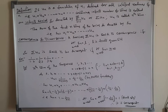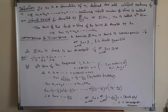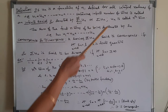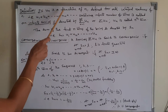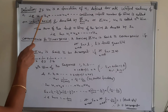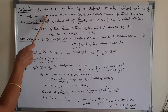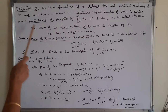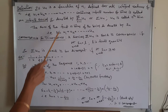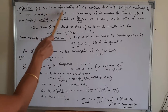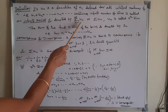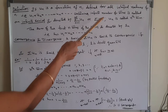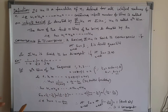If un is a function of n, defined for all integral values of n, then the expression can be written as U1 plus U2 plus so on plus un, containing an infinite number of terms. That is called an infinite series. It is denoted by sigma from n equals 1 to infinity of un, or simply sigma un. And un is called the nth term.